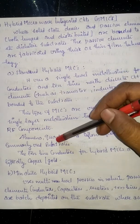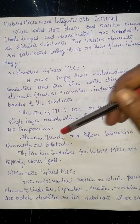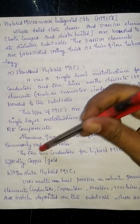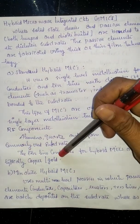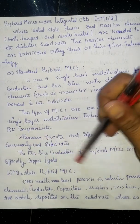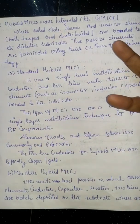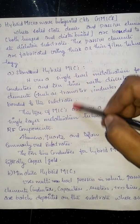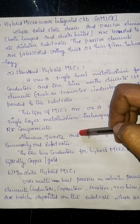The transmission line conductors used in hybrid MICs are typically copper or gold. That concludes the discussion on standard hybrid MICs.